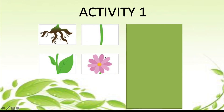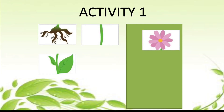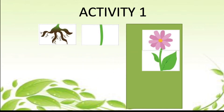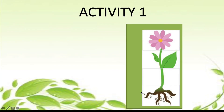Can you arrange the parts of the plant? Now which comes on top — the flower, the stem, the roots, or the leaf? It is the flower. Good job. Next comes the leaf. So first comes the flower, then the leaf. Now what comes here — the roots or the stem? The stem. And finally comes the roots. Good job.